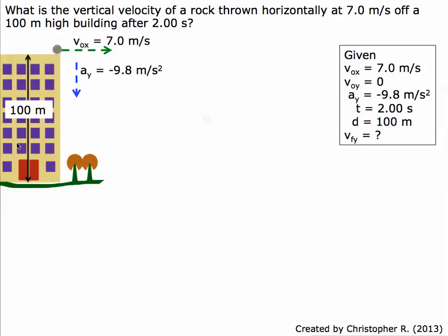Here we've got a rock and a building 100 meters high. The acceleration due to gravity is negative 9.8 meters per second squared. The rock is getting thrown off this way, and the velocity initially in the y direction, or the vertical direction, is 0.